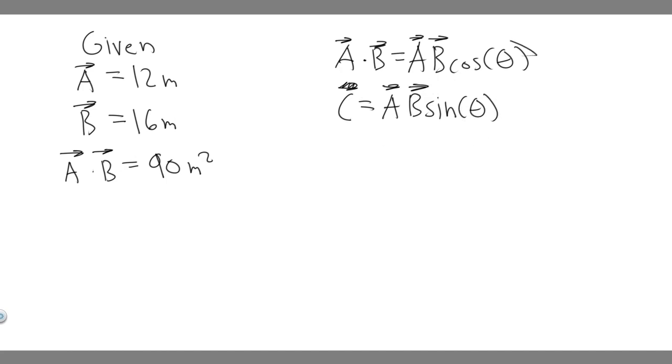So the way we find theta is by using this formula right here. The dot product between A and B is equal to A times B times the cosine of theta. We know this, it's the 90 meters squared, we know A, and we know B.